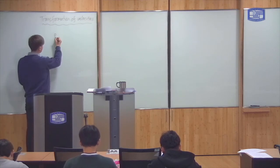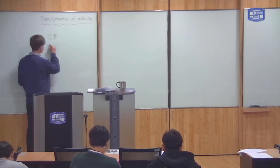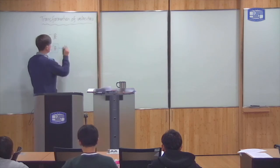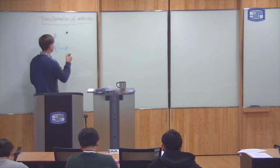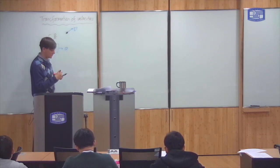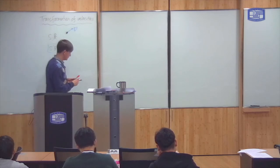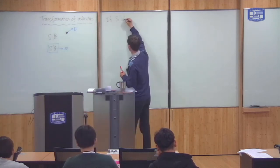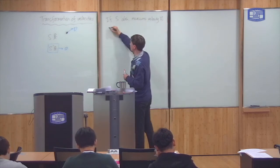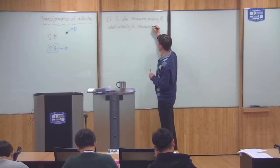This is the transformation of velocities. I have two observers, S and S prime. S prime is moving relative to S with velocity U. Both observers are watching some object — a particle — moving in the S frame with velocity V. The question is: what is the velocity measured by the S prime frame? If S measures velocity V, what velocity does S prime measure?